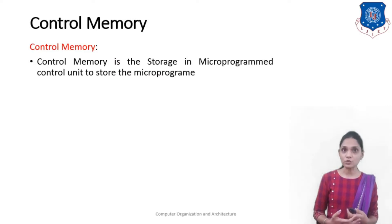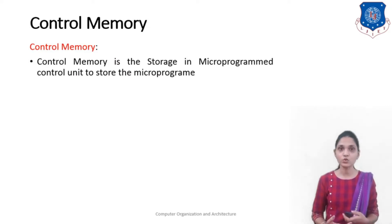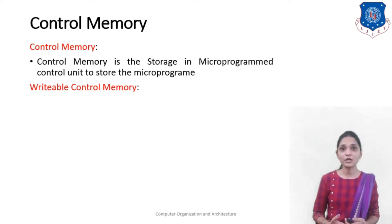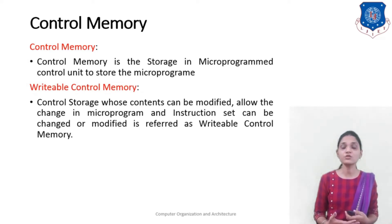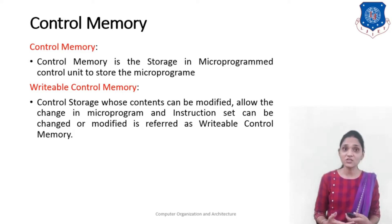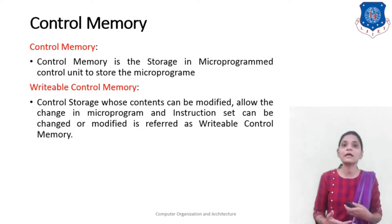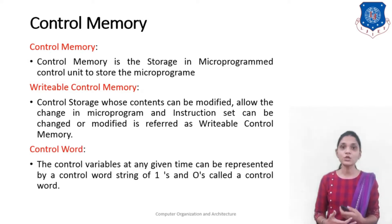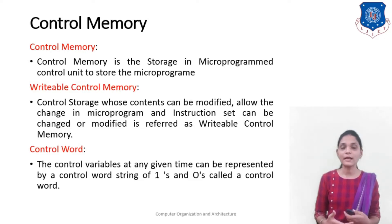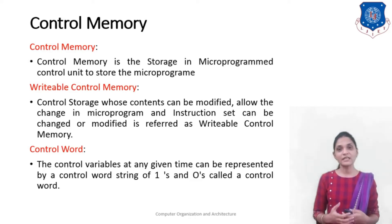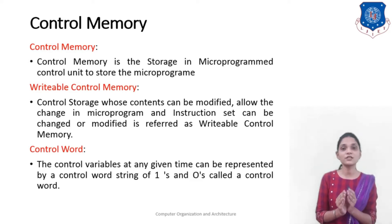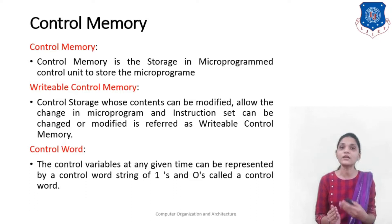The control memory is the storage in the micro-programmed control unit used to store the micro-program. The writeable control memory means the control storage whose contents can be modified, allowing changes in the micro-program; the instruction set can be changed or modified, and this is referred to as writeable control memory. The control word — the control variable at any given time — is referred to as a control word, and it is a string of 0s and 1s that defines what controls and micro-operations are generated for your particular instruction.